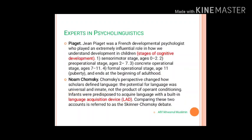The next expert is Jean Piaget, a French developmental psychologist who played an extremely influential role in how we understand child development. Piaget identified four stages of cognitive development: the sensorimotor stage from age zero to two, the pre-operational stage, the concrete operational stage, and the formal operational stage, which continues through the beginning of adulthood.